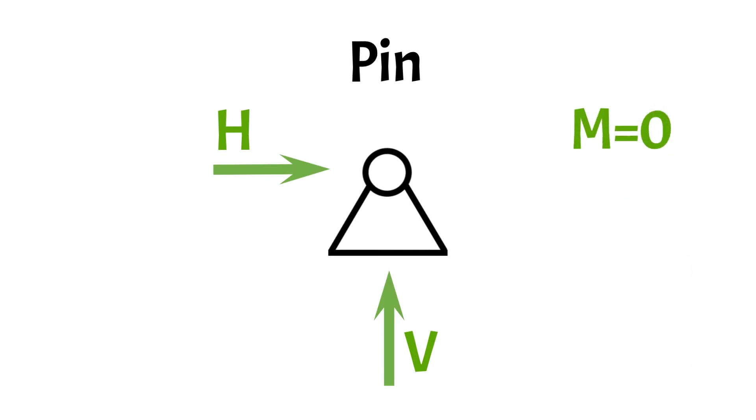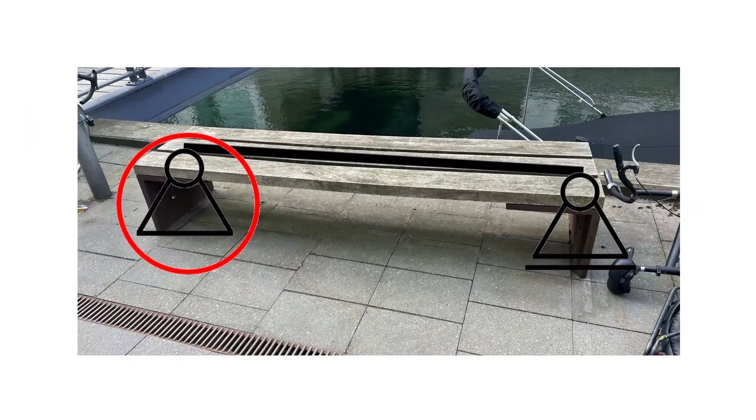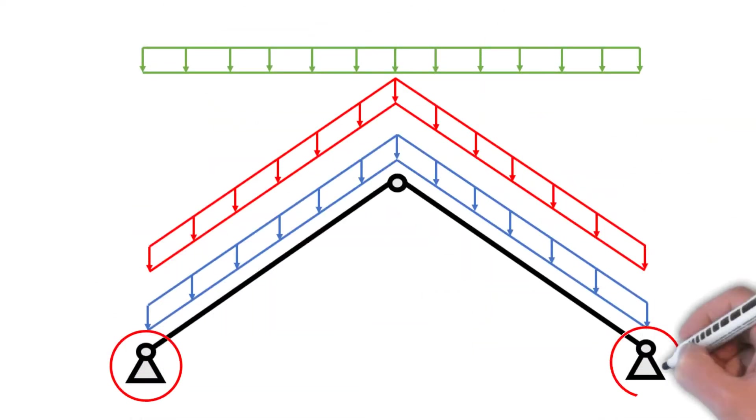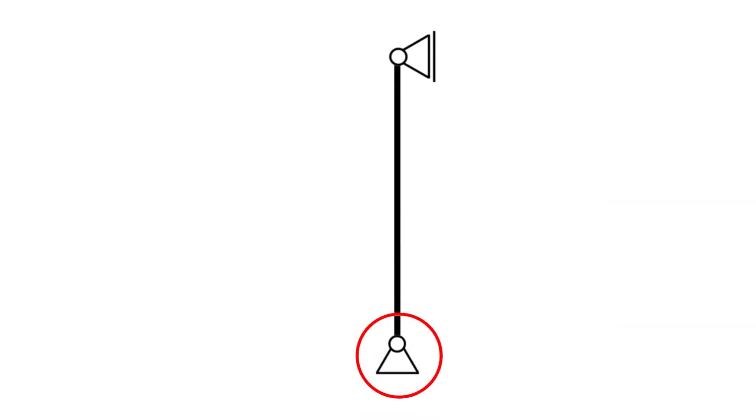Pin supports are, for example, used in simply supported beams such as the wooden beams of the bench from earlier. A rafter roof, for example, utilizes two pin supports. A simply supported column is also supported by one pin.